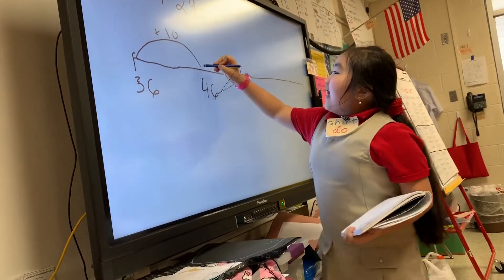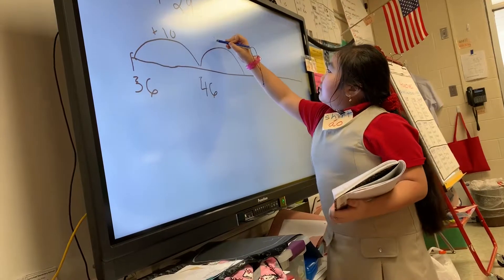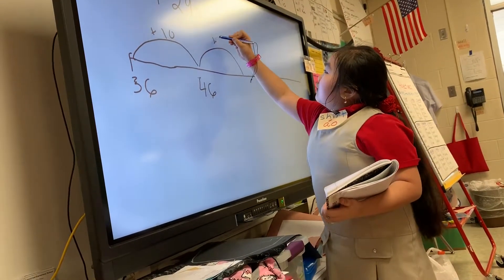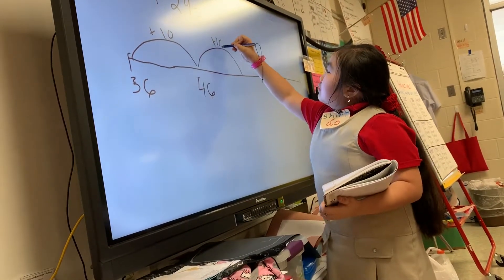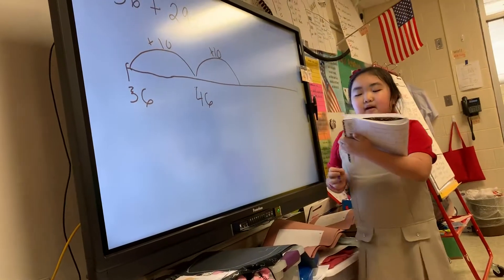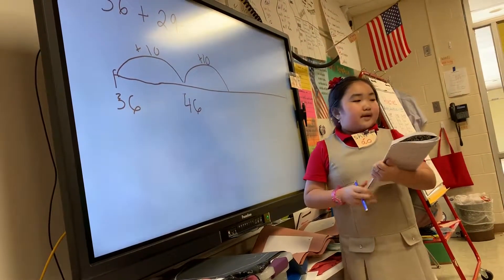Then I add another 10. Now I have nine left, but I want to break it up so it could be easier. So now I'm gonna use 4, and now I have 5 left, so I'm gonna add those.